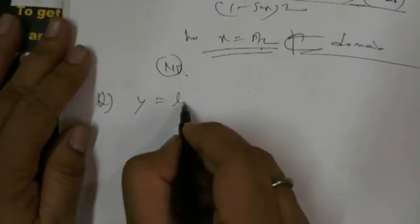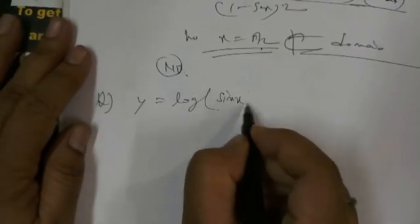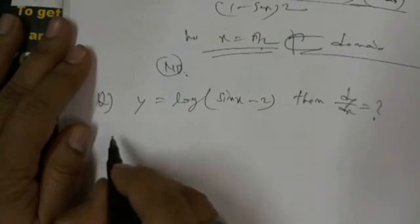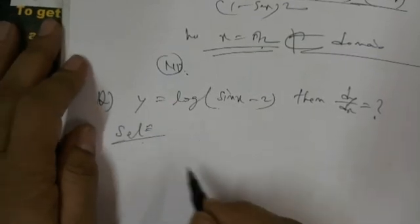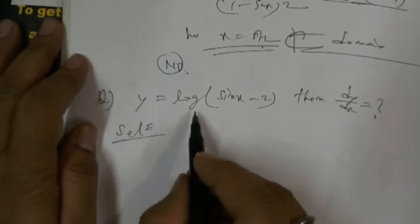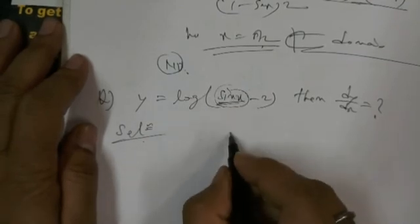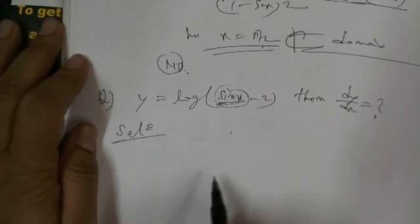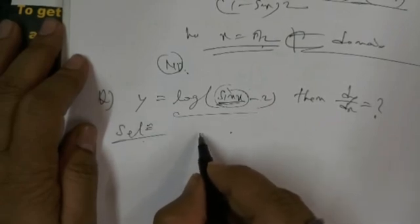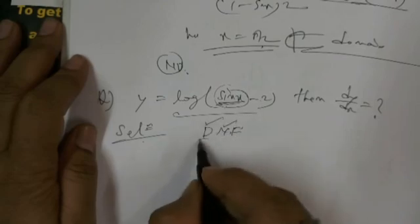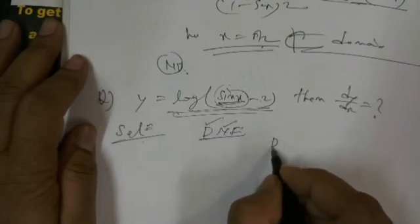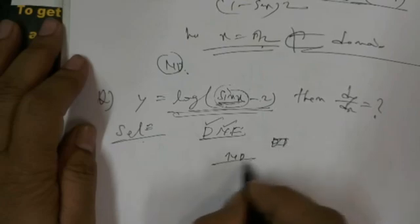Question 2: If y = log(sin x − 2), then what is dy/dx? Carefully observe: the maximum value of sin x is 1. So sin x − 2 ≤ −1, which is negative. Since the logarithm of a negative number does not exist, this function does not exist. Therefore, this function is also not differentiable.